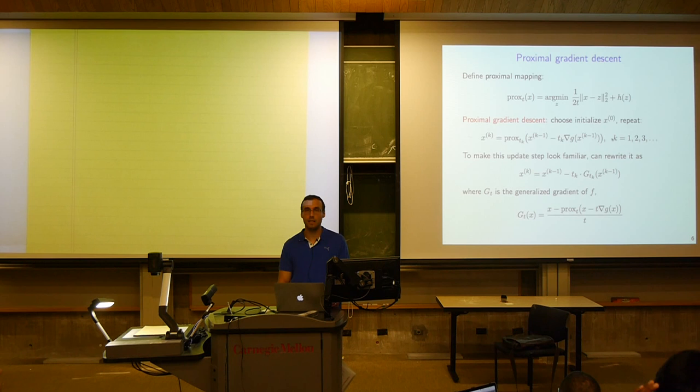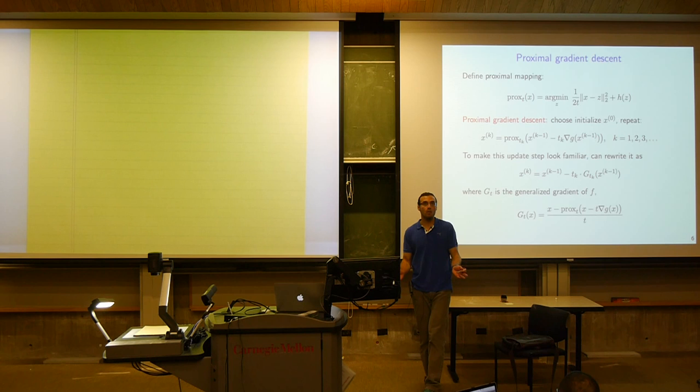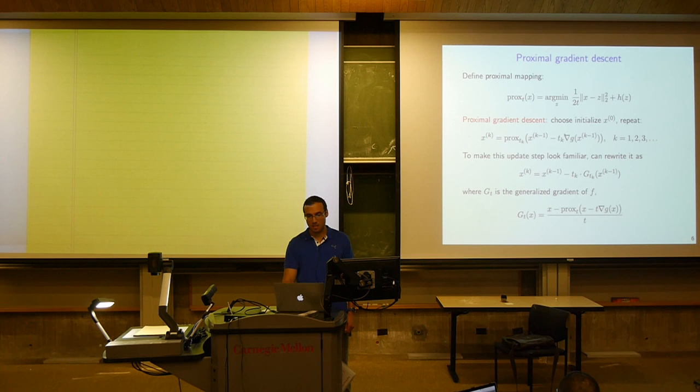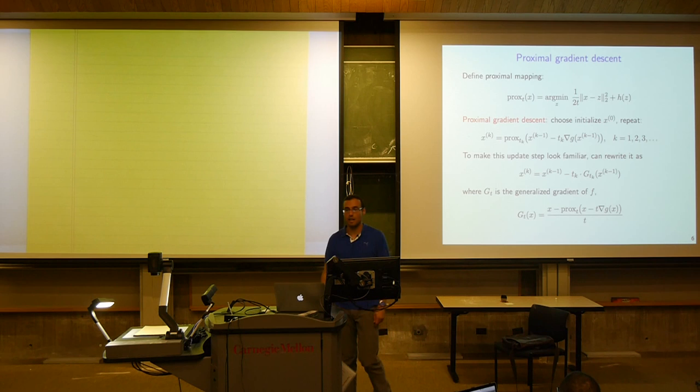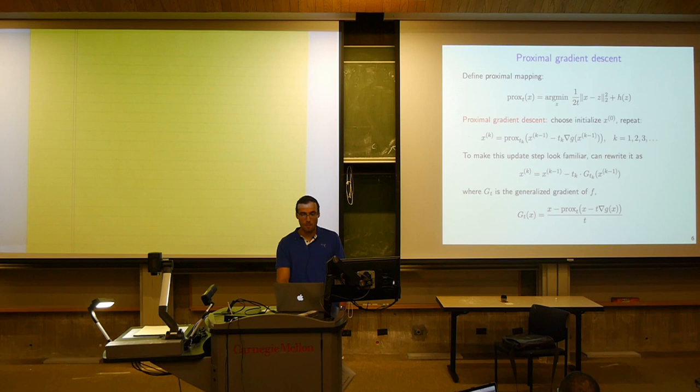Proximal gradient descent basically just makes a gradient step with respect to g, pretending like g was the only thing in the criterion, and then applies the prox of h to that. The step size tk affects the update in two ways: it affects the length of the gradient step with respect to g, and also the prox operator, since the parameter at which we evaluate the prox is also tk.